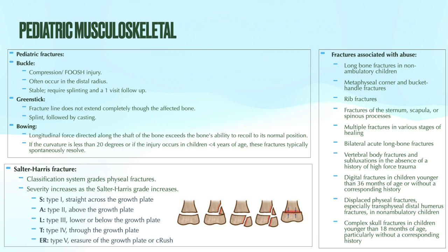Children exhibit unique fractures because of the compressibility of their bone, the increased fibrous strength, and the presence of growth plates. Examples of fractures unique to the pediatric population include a buckle fracture, greenstick fracture, bowing fracture, and Salter-Harris fracture. A buckle fracture occurs after a compression injury, and typically occurs in the distal radius after a FOOSH injury — falling on outstretched hand. Buckle fractures are considered stable; they're managed with splinting and then a one-time follow-up.